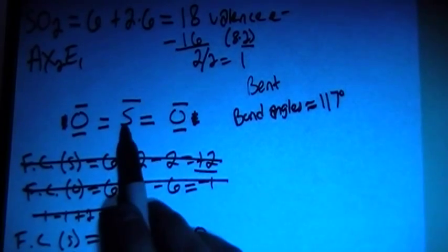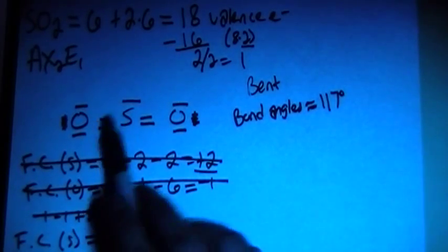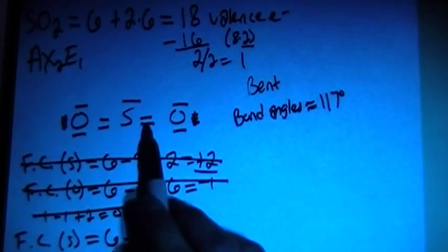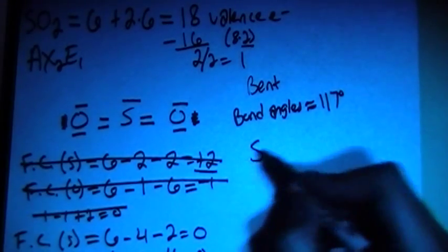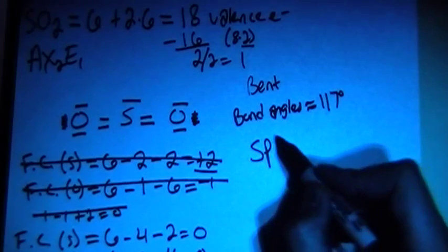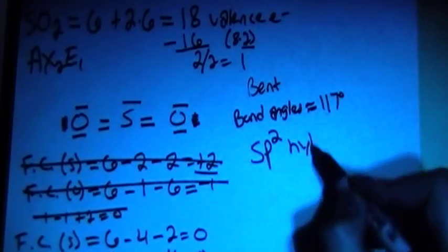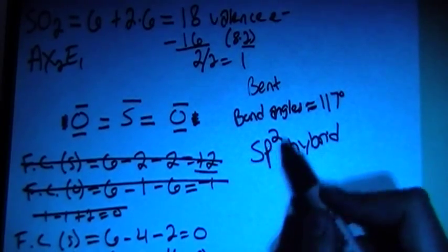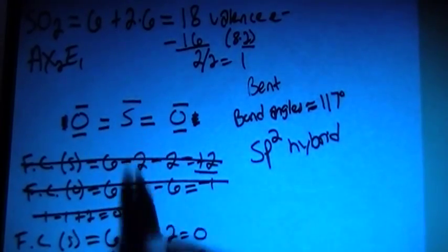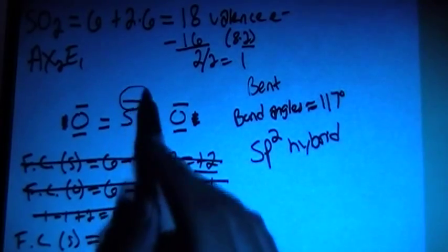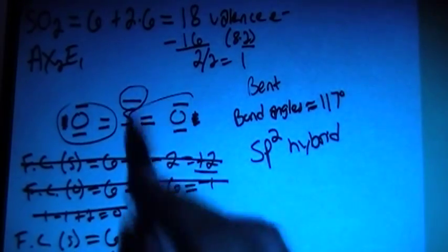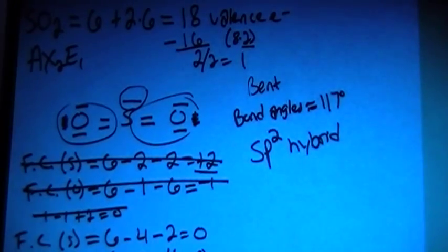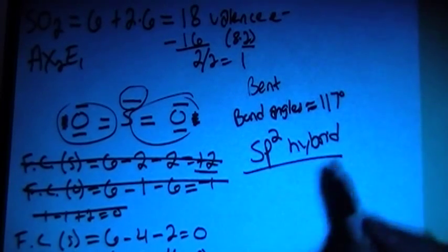And because, you see, sulfur is here in the center. It has 1, 2, 3 bonding sites. That means that it's going to be SP2 hybridized. Because it's SPP, so it's 3 orbitals for 3 bonding sites. This right here counts as 1 bonding site, and each of these oxygens is a 2nd and 3rd. So that's going to be your 3 bonding sites for SP2 hybridized.